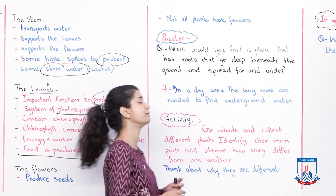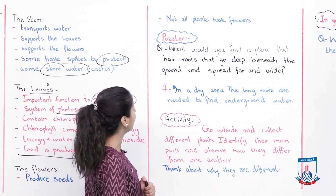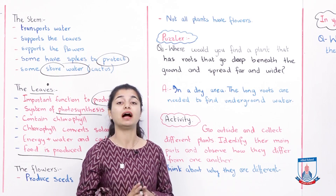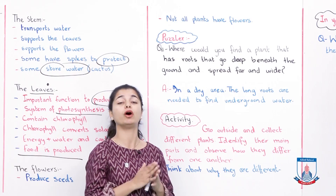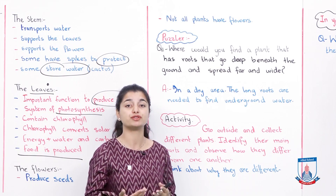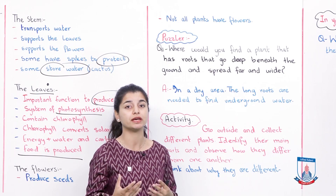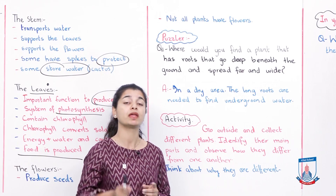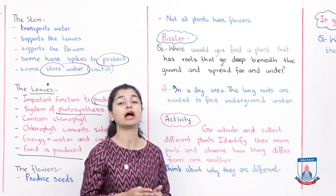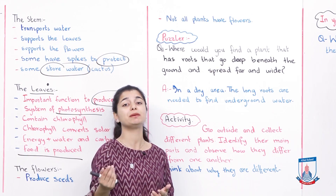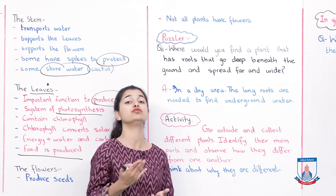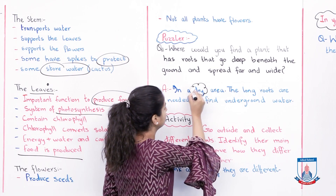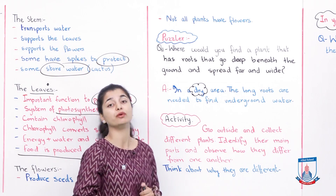Now let's look at a puzzle question: Where would you find a plant that has roots that go deep beneath the ground and spread far and wide? Think about it — if you are in a place where there is a lot of water, you don't need very long and elongated roots. But where there is not much water, you need deep spreading roots to reach underground water. So in a dry area, the long roots are needed to find underground water. That is the reason for those kinds of deep roots.